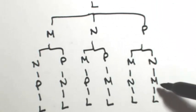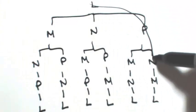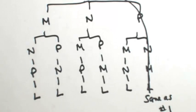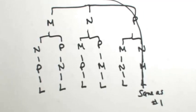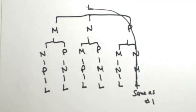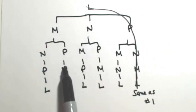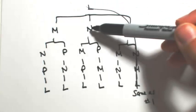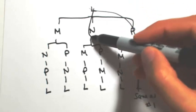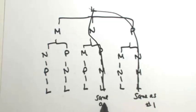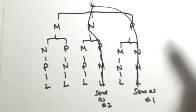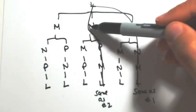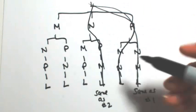The same idea if I go L to M to P to N to L, that's the same thing as L to N to P to M to L. So L to N to P to M to L is the same as number two. And L to N to M to P to L is the same as L to P to M to N to L. That one's the same as number three.